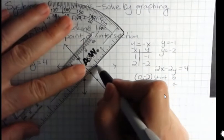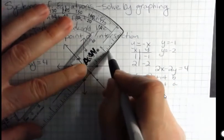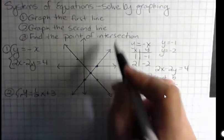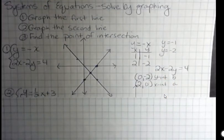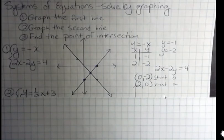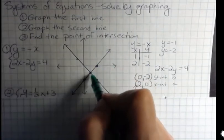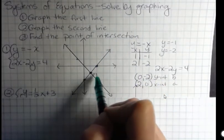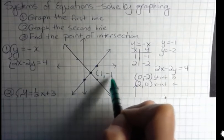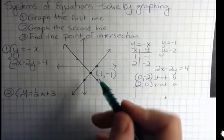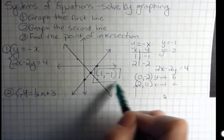And this one I can see is going to have a solution, because I can see that my two lines intersect. If they intersect, that point of intersection is the solution. And this is the point of intersection right here, which is 1, negative 1. So the answer to my system is right here, 1, negative 1.